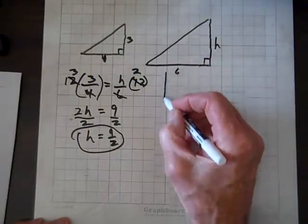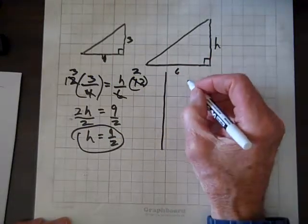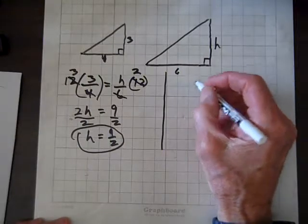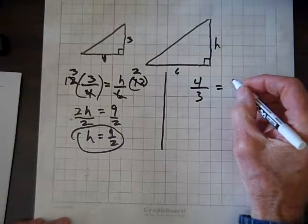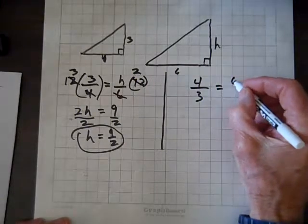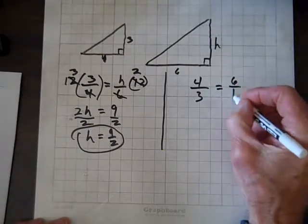Now, let's do it a different way. What if you write this? What if you write 4 over 3 equals 6 over H?